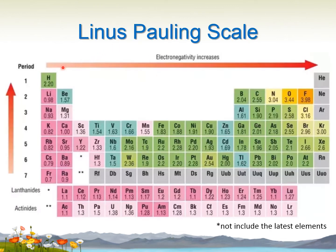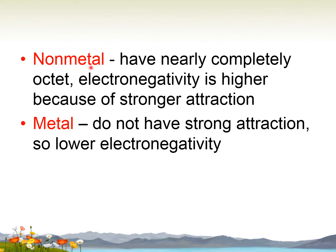According to the Linus Pauling scale, based on the periodic table, electronegativity increases across the period and increases going up the group. Non-metals, which consist of usually groups 14 to 18, have nearly complete octet configuration, so electronegativity is higher because of stronger attraction. Metals, usually from group 1, group 2, and group 13, do not have strong attraction, so they have lower electronegativity.